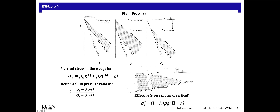The vertical stress sigma_z is equivalent to the weight of the material above. At the bottom of the ocean, the pressure is rho_w·G·D where D is water depth. As we go further into the earth, we get an extra term — rho·G·(H-Z) — simply saying the deeper we go, the higher the stress. We call this the lithostatic pressure. The hydrostatic pressure is the fluid pressure of water in the pore spaces of the sediment inside our wedge, which continues to increase at the hydrostatic pressure gradient rho_w·G·depth.